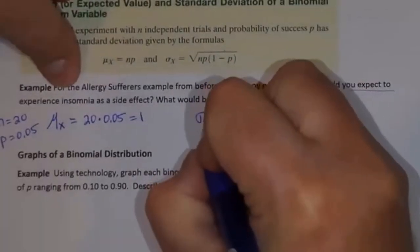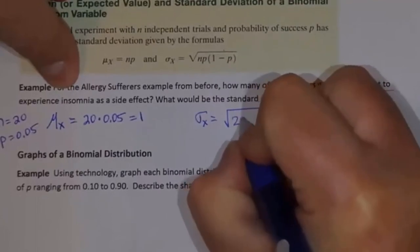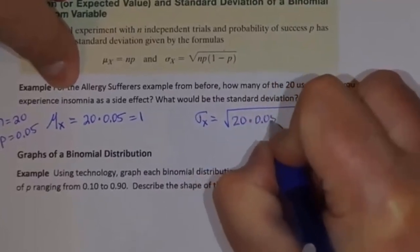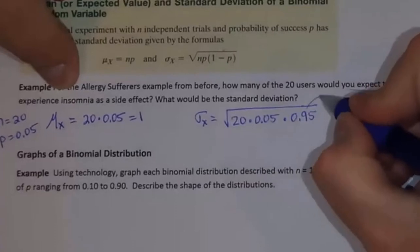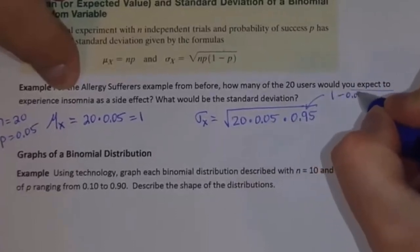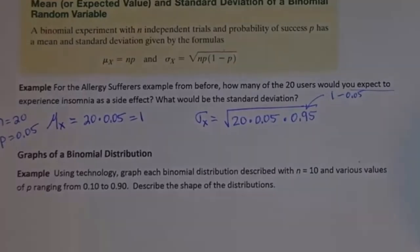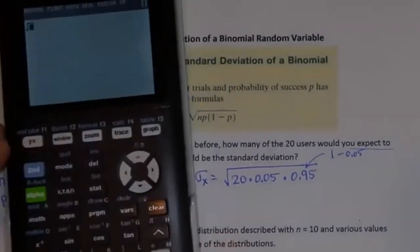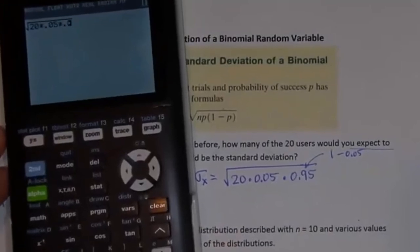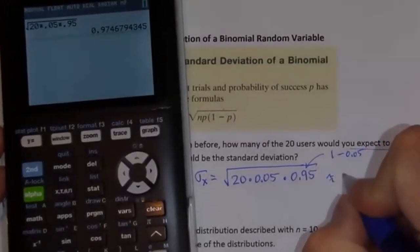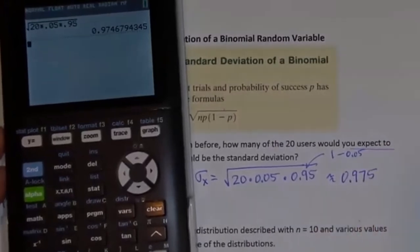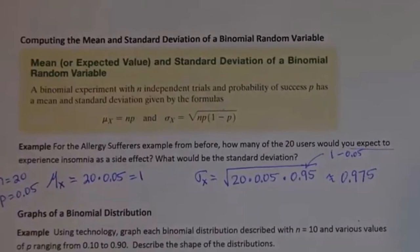The standard deviation is the square root of N (20) times P (0.05) times 1 minus P (0.95). That 0.95 is 1 minus 0.05, the probability of failure. Taking the square root of 20 times 0.05 times 0.95 gives 0.975 rounded to three places. So we'd expect one person to experience insomnia, with a standard deviation of 0.975, giving an idea of the dispersion.